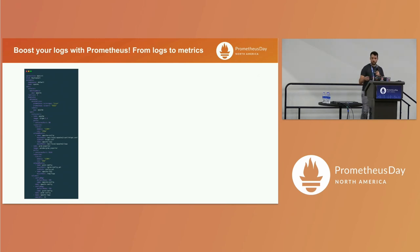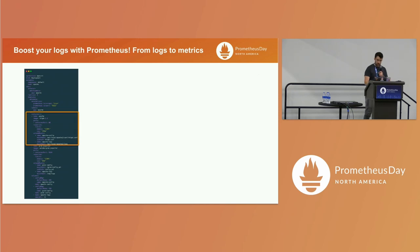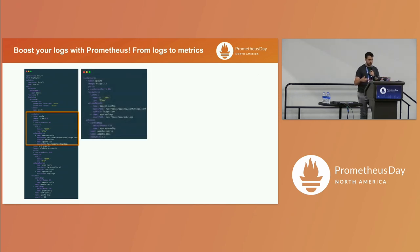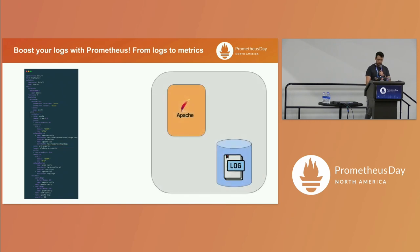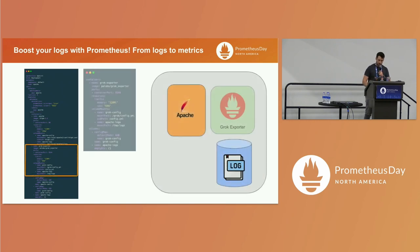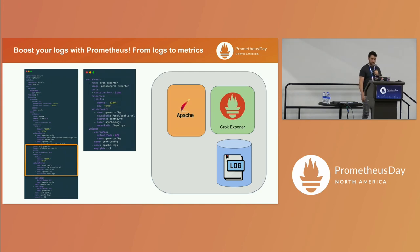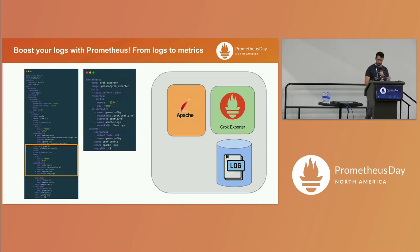First of all, we configure the source of information - it's very simple. We deploy our Apache application, specify the volume we want to share, and after that we deploy our Grok exporter. The only two things we need to apply are the Grok configuration and the same volume that Apache is using for its logs.